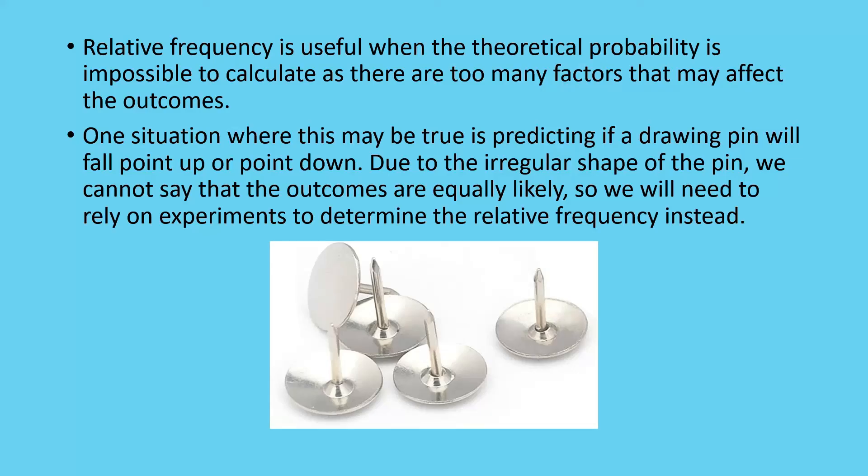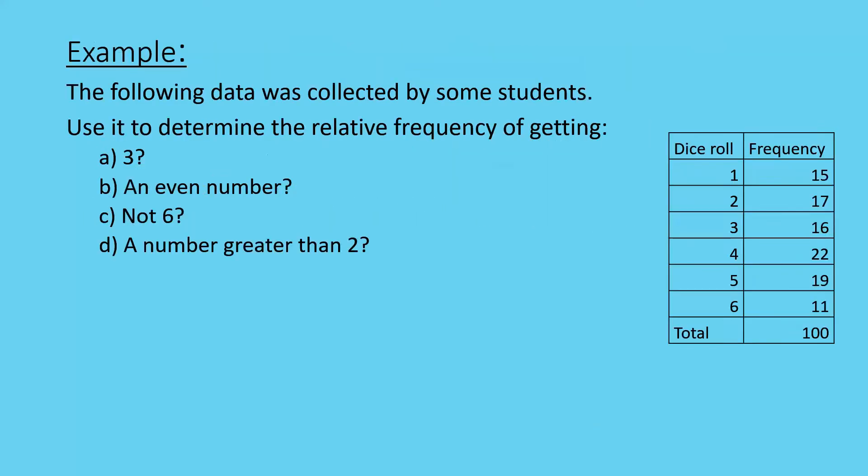So let's take a look at a little example here. We're using a similar sort of question of what was achieved. But now we're experimenting with these dice. So we're going to still look for the probability of getting a 3, an even number, not a 6, and a number greater than 2. But now we're looking at dice rolls. So someone sat down and rolled the dice 100 times and recorded the information.